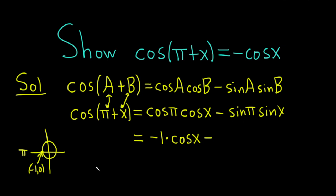Minus. And then the sine of π, well, that would be the y coordinate at π, which you can see from the unit circle is 0. So sine of π is 0 times the sine of x.